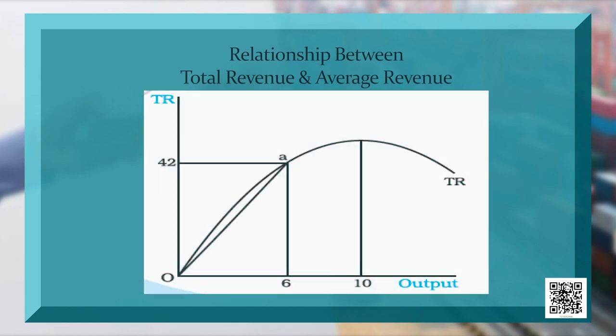You can see in the curve that TR increases initially, then it reaches to its maximum and finally declines. AR, Average Revenue, which is also known as price, keeps on declining but it never reaches to zero.